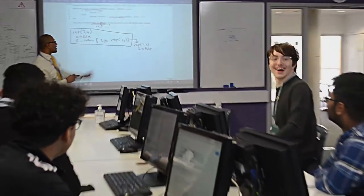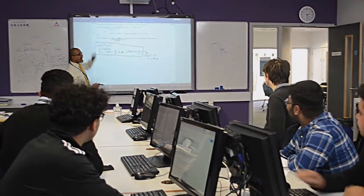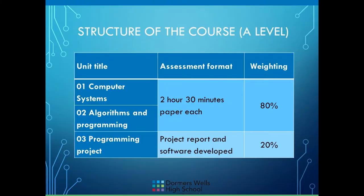Welcome to A-Level Computer Science at Dormers Wells High School 6th Form. The course consists of two exam papers of two and a half hours each, worth 80% of your overall grade, and a programming project where you choose your client and create something of your own choosing.